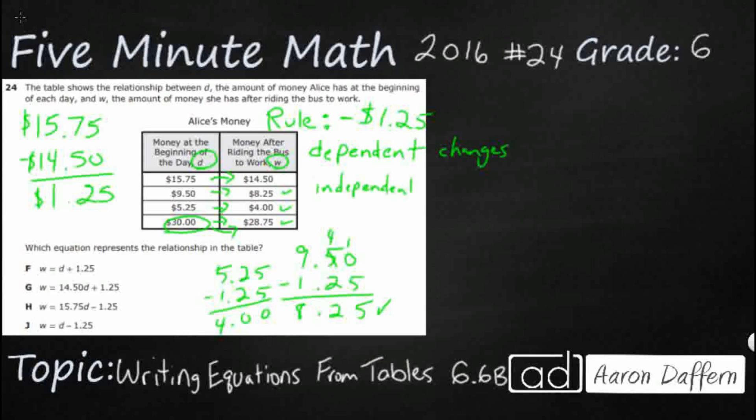So let's look at our dependent variable first, because that's what we want to get. That's going to be our answer. How do we get from D to W? So our dependent variable is the one that changes. That's going to be our W.